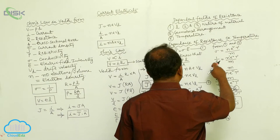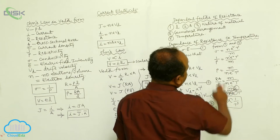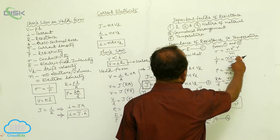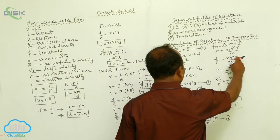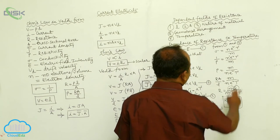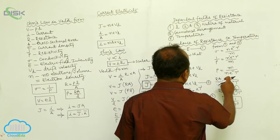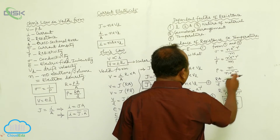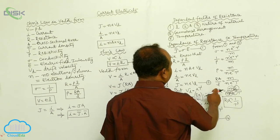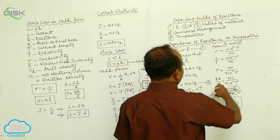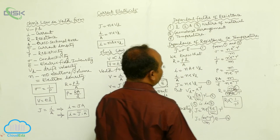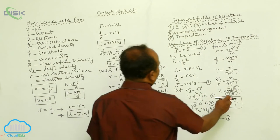Since sigma equals 1 by rho, we have 1 by rho equals n e squared tau by m. Therefore rho equals m by n e squared tau. And since rho equals R A by L, resistance R equals m l by n A e squared tau.